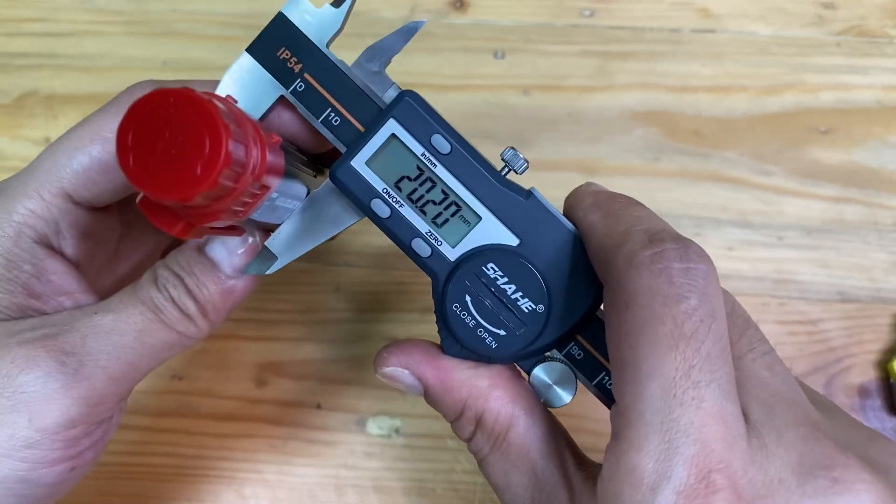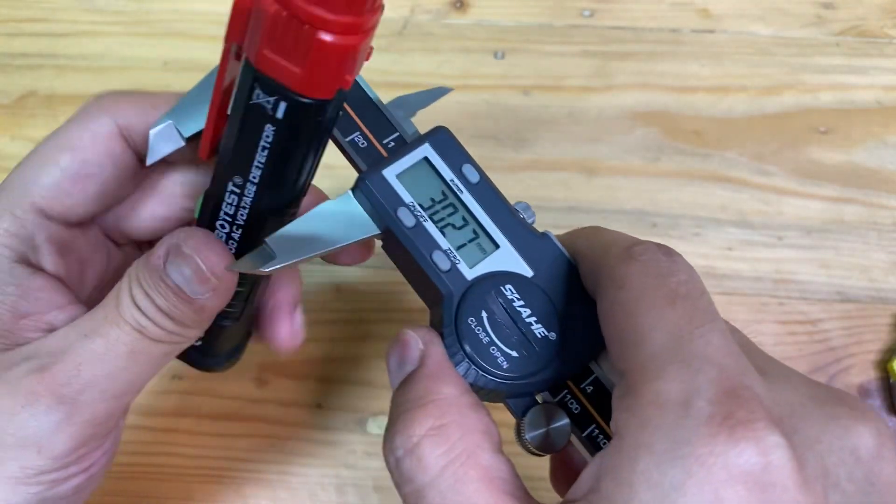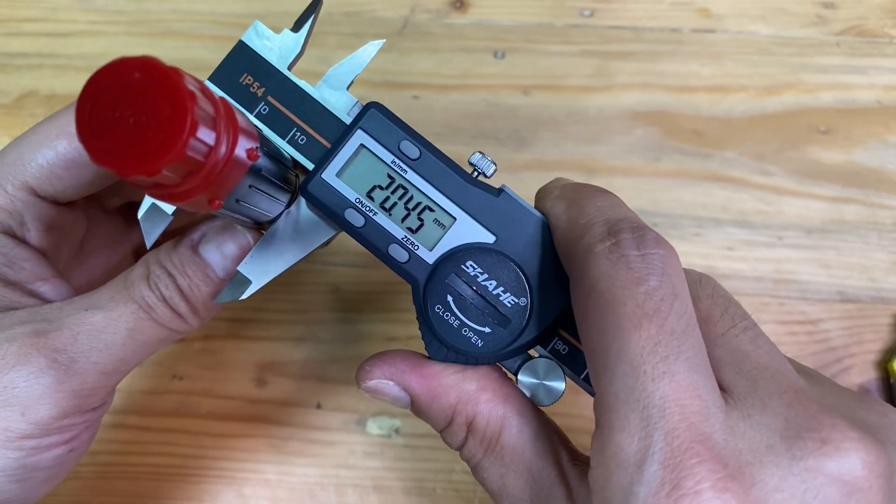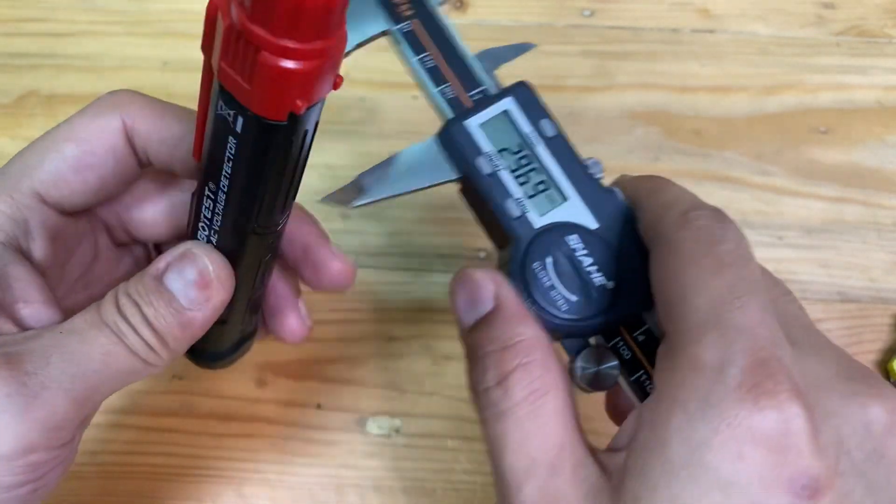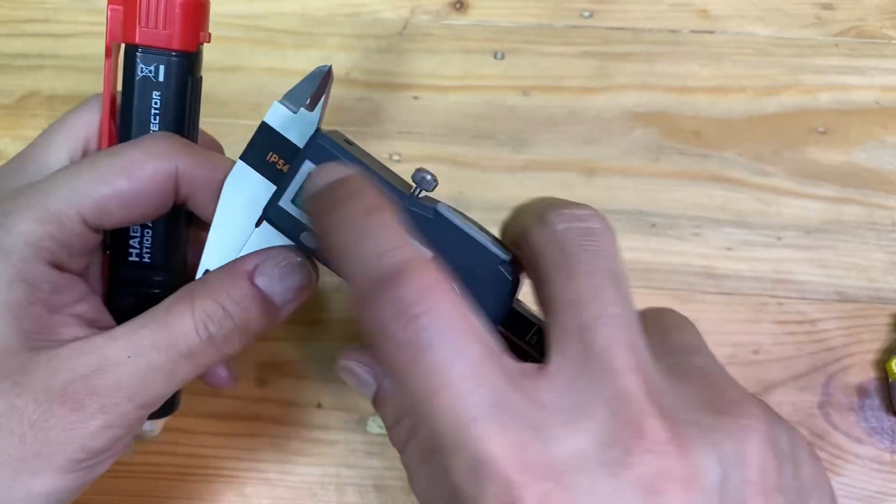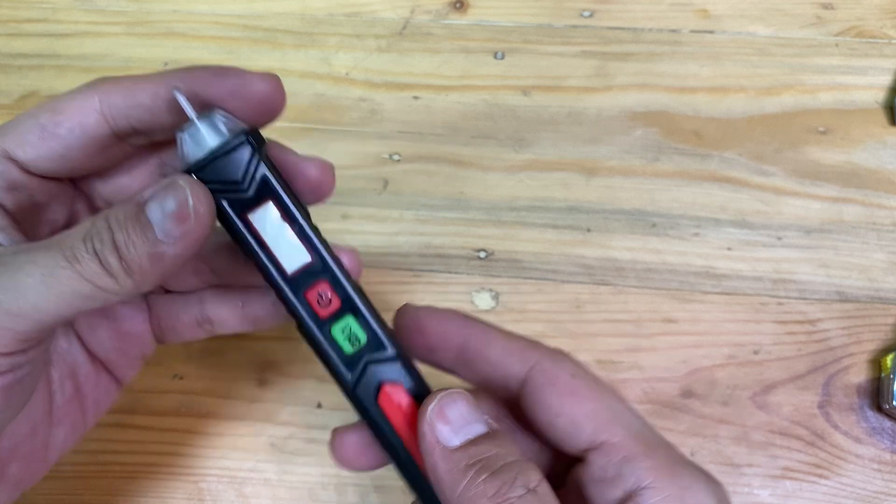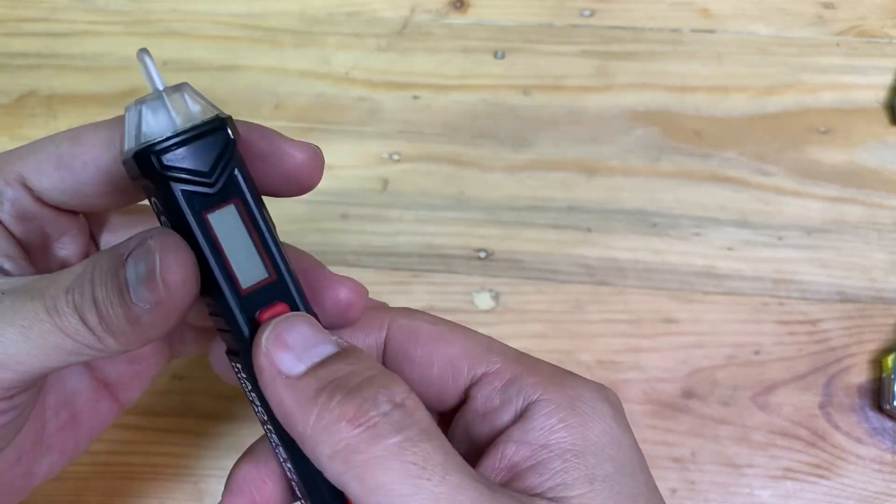The thickness is two centimeters by two centimeters. Now we're going to test the pen. Turn the power on.